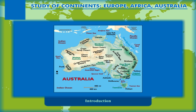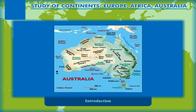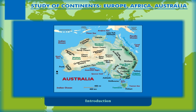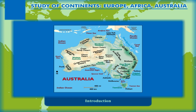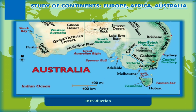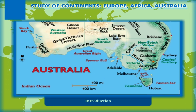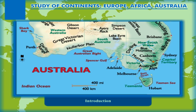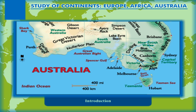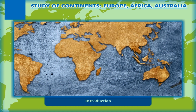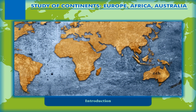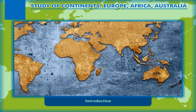Australia is a country comprising the mainland of the Australian continent, the island of Tasmania, and numerous smaller islands. It is the world's sixth largest country by total area.